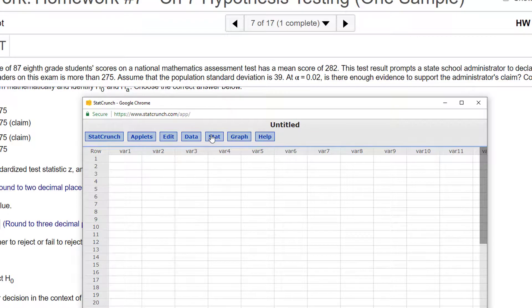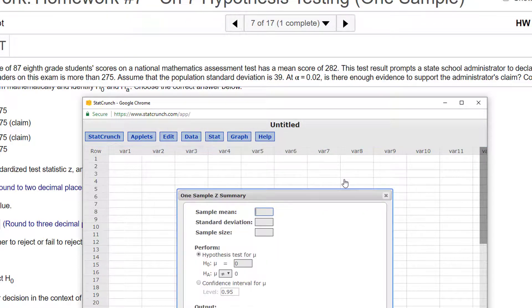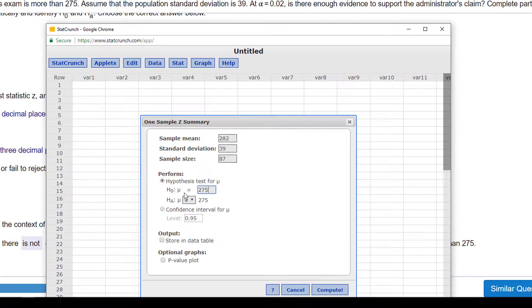And so, in StatCrunch, you'll just go to Stat. This is z. One sample with summary. I don't have any data. And so, I put in my sample mean. I put in my standard deviation. I put in my sample size. And just don't forget here to change this.